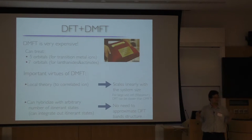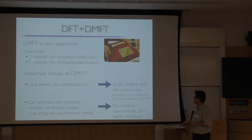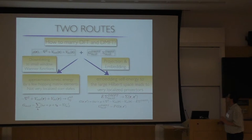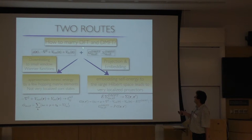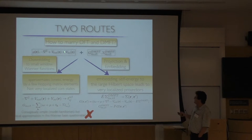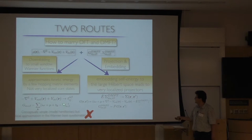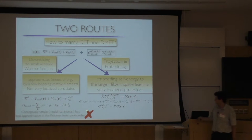You can do DFT+DMFT in two ways. Most current work does it by downfolding the DFT band structure into a tight-binding Hubbard model with hoppings T_{ij}, then adding local self-energy. But I think this is not so good, because the orbitals in that case are not very localized — they can be Wannier states — and then the DMFT approximation is not great. For DMFT to work well you want very localized orbitals, where on-site interaction is large and inter-site interactions are small.